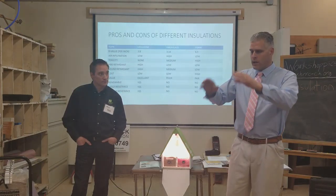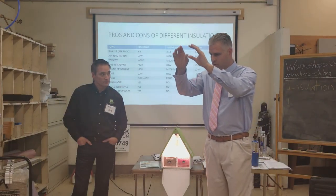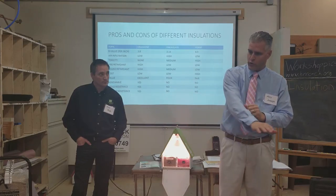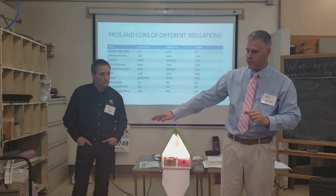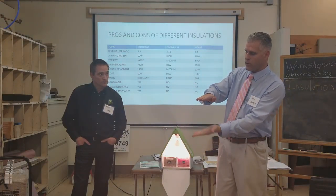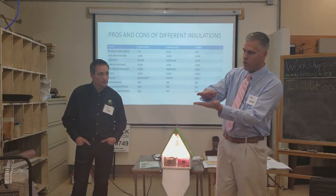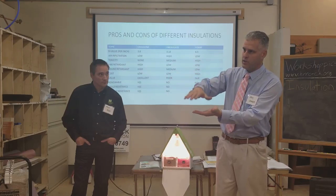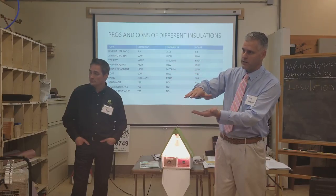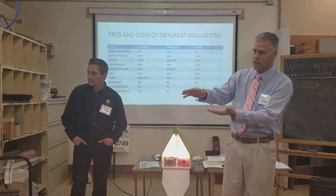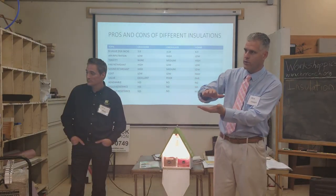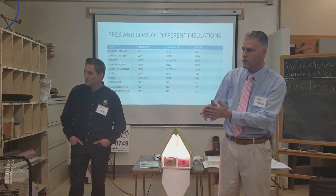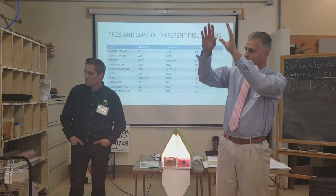In an attic space you have your roof rafters that come down and then your floor joists across the floor. Typically, the drywall is fastened under the floor joists and then insulation is installed on top of that. Is that the situation you're dealing with? Audience member: No, I was going to put fiberglass up into the joists — up into the rafters.